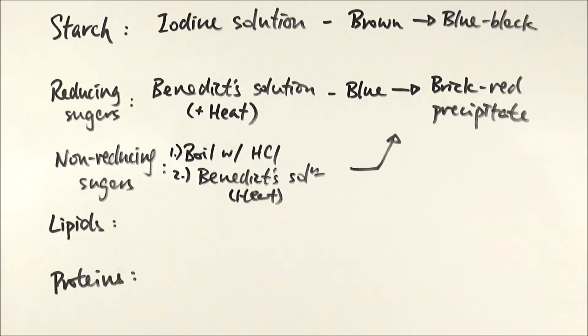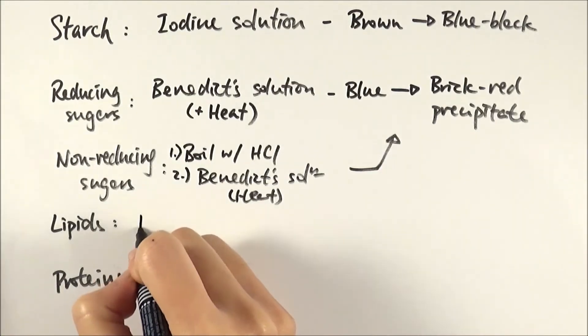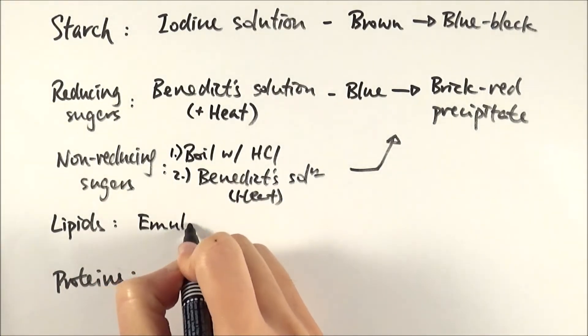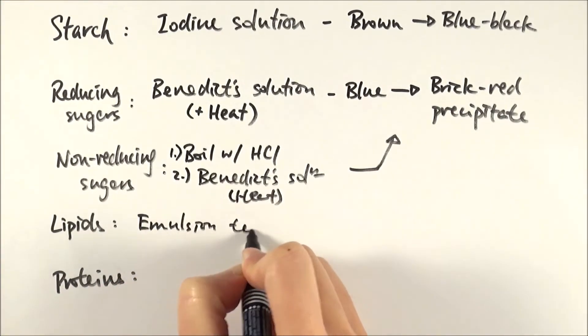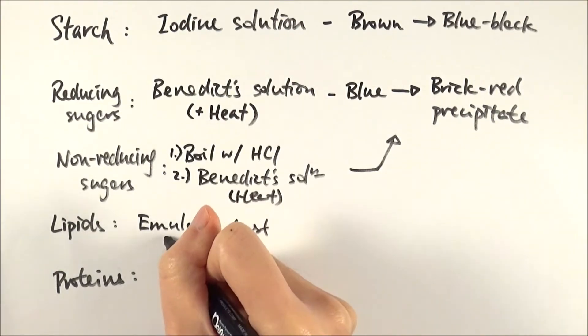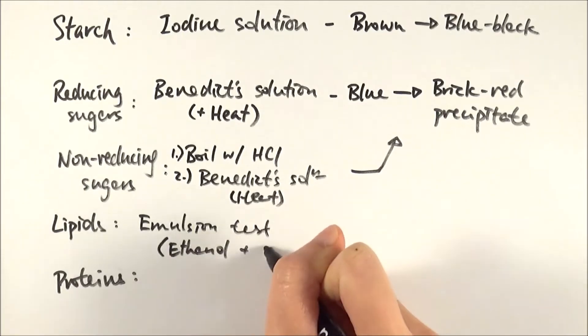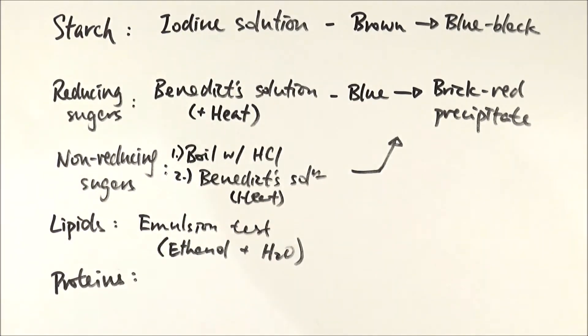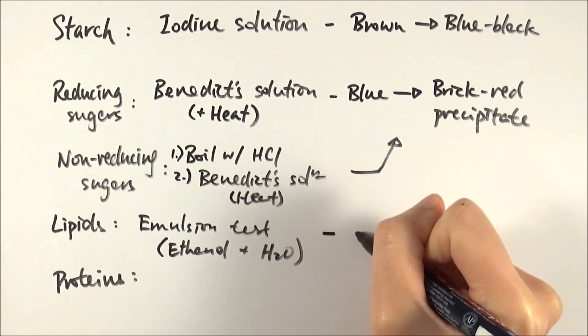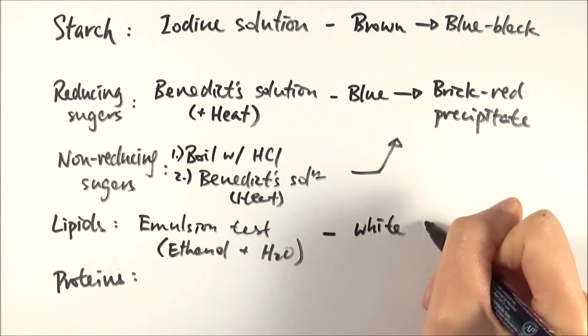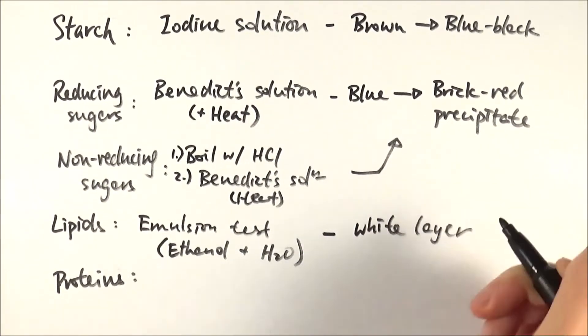The next one, lipids. It's actually a really easy test called the emulsion test. What you're doing is mixing ethanol with your sample, and then you mix it with water. You dissolve the lipids in the ethanol, then mix it with water, and you get an emulsion result. A positive test is that you can see a white emulsion layer formed. If you test any butter or oil, that's the result you will see.